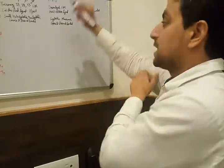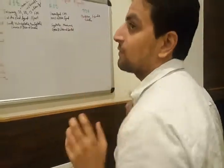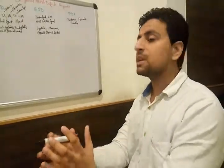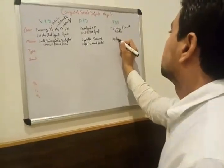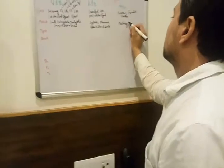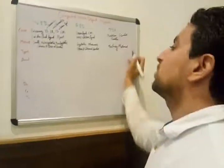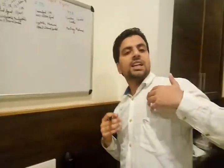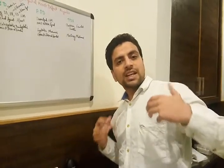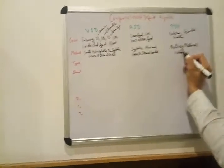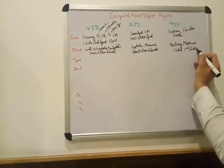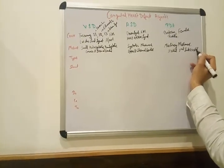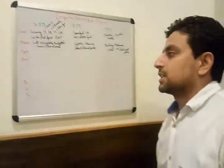In the case of PDA — patent ductus arteriosus — the murmur is a continuous murmur, also called a machinery murmur. We listen for this murmur at the left second intercostal space.